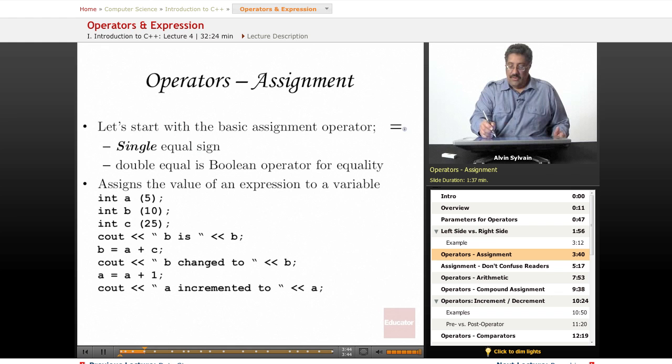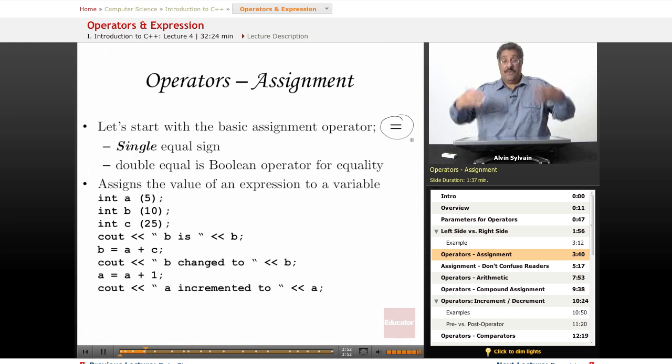We'll do a little bit more on our basic assignment operator. It's a single equal sign. In C and C++, there's also a double equal sign, but it has a completely different meaning. Here we have some expressions. We have int, A is an int initialized to 5. B is initialized to 10. C is initialized to 25.